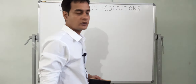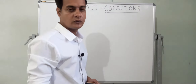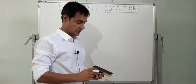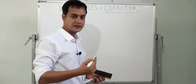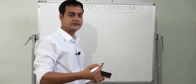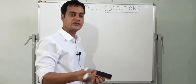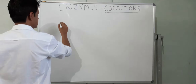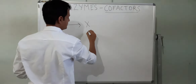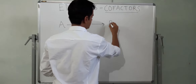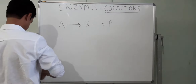In this video we are going to talk about cofactors. Before talking about cofactors, let's talk about enzymes and how they work. Enzymes work by converting the substrate into a transition state, and then the transition state into a product. The substrate is the molecule on which the enzyme works.